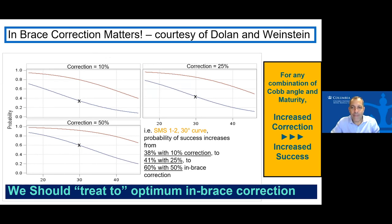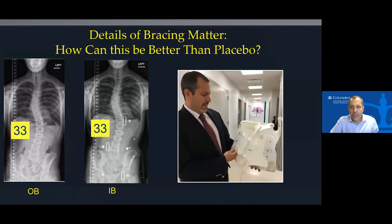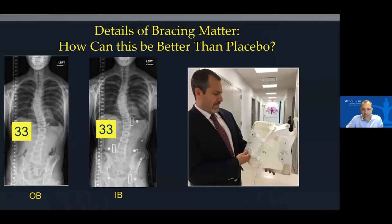Braced also taught us that not only does it matter how much you wear the brace, but the amount of correction matters. For any combination of Cobb angle and maturity, more correction meant more success at avoiding progression. Unfortunately, this is not commonplace — about once a week I see a child who has a brace from an outside institution who has never had an X-ray in the brace. When we get that X-ray, there's often really no correction at all.